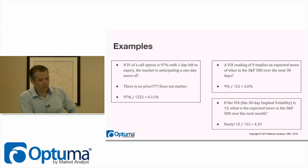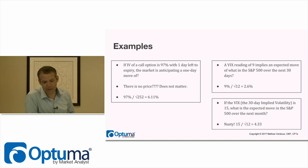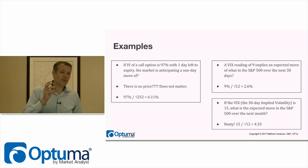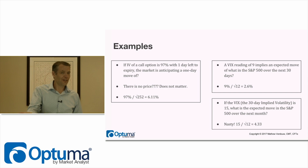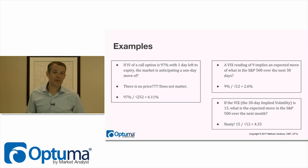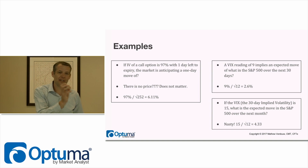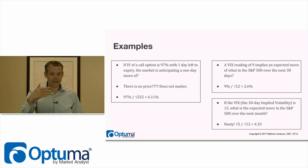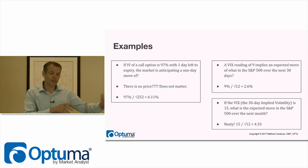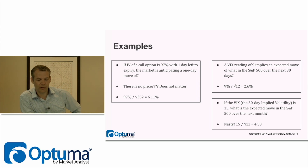Final example: if the VIX — which is the 30-day implied volatility — is 15, what is the expected move in the S&P 500 over the next month? This is a tricky one. Any test writer worth their salt would put 15 as one of the multiple choice answers, because many people would say 'it's the 30-day volatility, so I'll just take 15.' But no — the VIX and implied volatility are annualized, so we must bring it back. It's built off 30 days but then annualized forward. So we do 15 divided by the square root of 12, which is 4.33%.